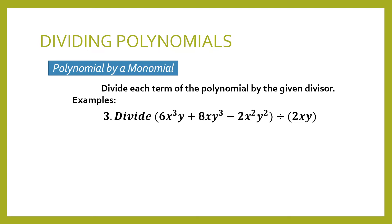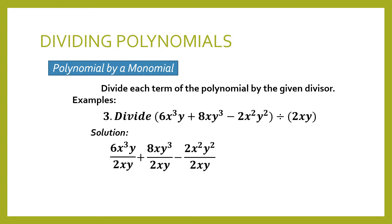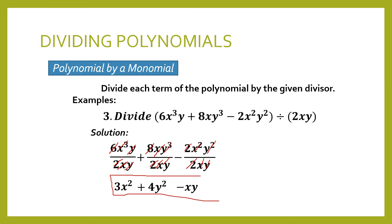For the third example, we divide 6x cubed y plus 8xy cubed minus 2x squared y squared by 2xy. We distribute our divisor. For the first term, 6 divided by 2 is 3, x cubed divided by x is x squared, and y and y cancel. Next, 8 divided by 2 is 4, x and x cancel, and y cubed divided by y is y squared. For the last term, 2 and 2 cancel, x squared divided by x is x, and y squared divided by y is y. Our final answer is 3x squared plus 4y squared minus xy.